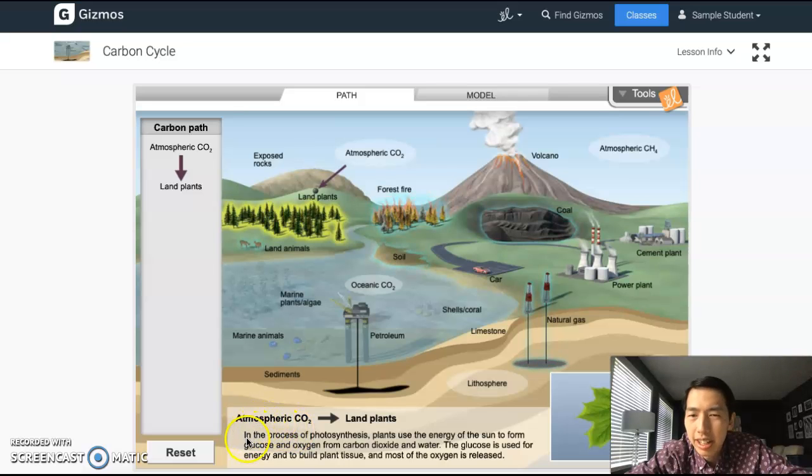So at the bottom it explains what happened. It says: In the process of photosynthesis, plants use the energy of the sun to form glucose and oxygen from carbon dioxide and water. The glucose is used for energy and to build plant tissue, and most of the oxygen is released. So that was stuff you may remember from the photosynthesis and cellular respiration lesson.